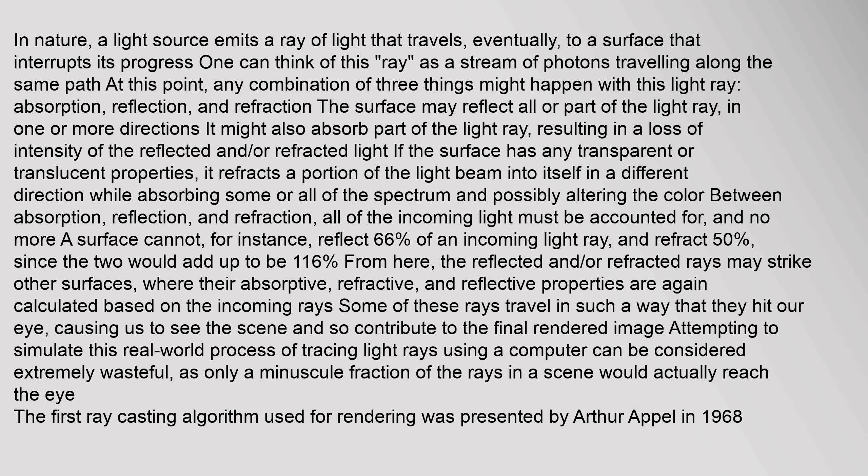Any combination of three things might happen with this light ray: absorption, reflection, and refraction. The surface may reflect all or part of the light ray in one or more directions. It might also absorb part of the light ray, resulting in a loss of intensity of the reflected and/or refracted light. If the surface has any transparent or translucent properties, it refracts a portion of the light beam into itself in a different direction, while absorbing some or all of the spectrum, and possibly altering the color. Between absorption, reflection, and refraction, all of the incoming light must be accounted for, and no more.